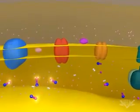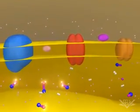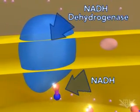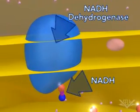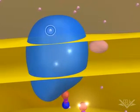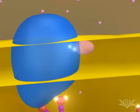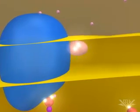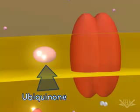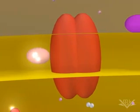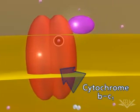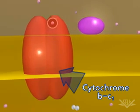At the start of the electron transport chain, two electrons are passed from NADH into the NADH dehydrogenase complex. Coupled with this transfer is the pumping of one hydrogen ion for each electron. Next, the two electrons are transferred to ubiquinone, a mobile transfer molecule that moves the electrons to the cytochrome BC1 complex.